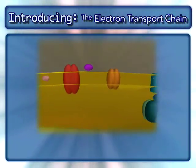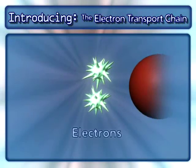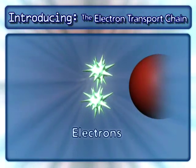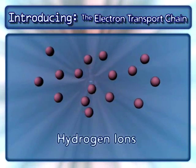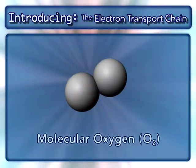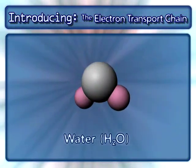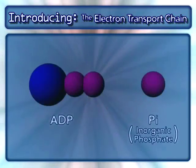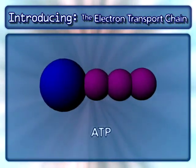Other key components in this process are NADH and the electrons from it, hydrogen ions, molecular oxygen, water, and ADP and inorganic phosphate, which combine to form ATP.